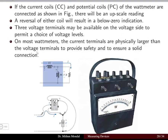An upscale reading occurs when the connection is made as shown in the figure. There will be a positive terminal and a negative terminal; the current flows into the positive terminal and out of the negative terminal, and in that case the wattmeter reading will be an upscale reading.